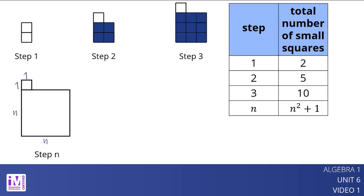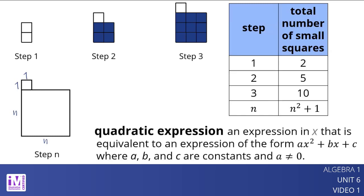The relationship between the step number and the number of small squares is a quadratic relationship because it is given by the expression n squared plus 1, which is an example of a quadratic expression. A quadratic expression is an expression in x that is equivalent to an expression of the form ax² + bx + c, where a, b, and c are constants and a is not equal to 0.